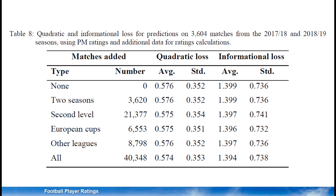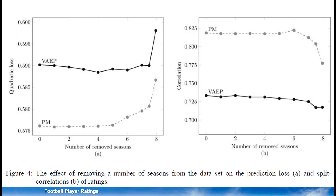This table shows how the quality of predictions changes when ratings are calculated based on various extended datasets. A bit surprisingly, the predictions are more or less equally good even when we are adding more data. Since plus-minus already performs better than VAEP for our original dataset, we instead tried the opposite test: what if we remove data? How little data do we have to keep for plus-minus ratings to still be better than VAEP ratings? And we found that even if we remove almost all training data, the plus-minus ratings are still more reliable and have higher validity than the bottom-up ratings. Quite surprising, really.